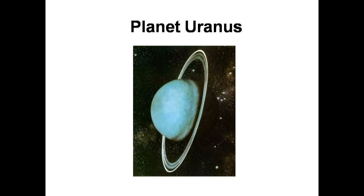The next planet is Uranus. The blue-green colored planet is the third largest planet in the solar system. It is about four times the size of Earth. It also has a ring like Saturn.